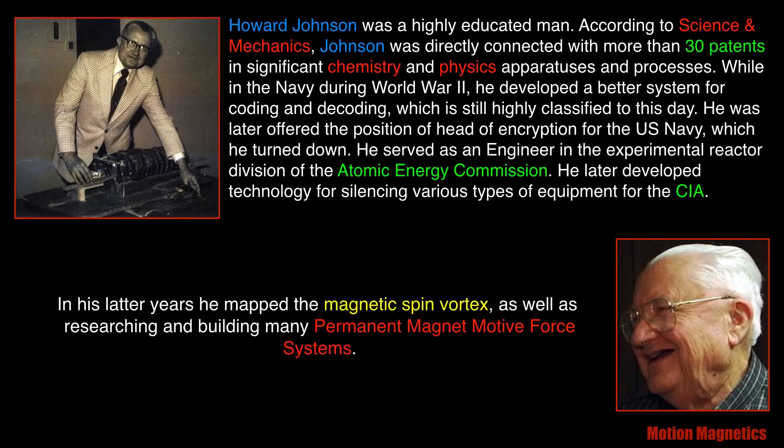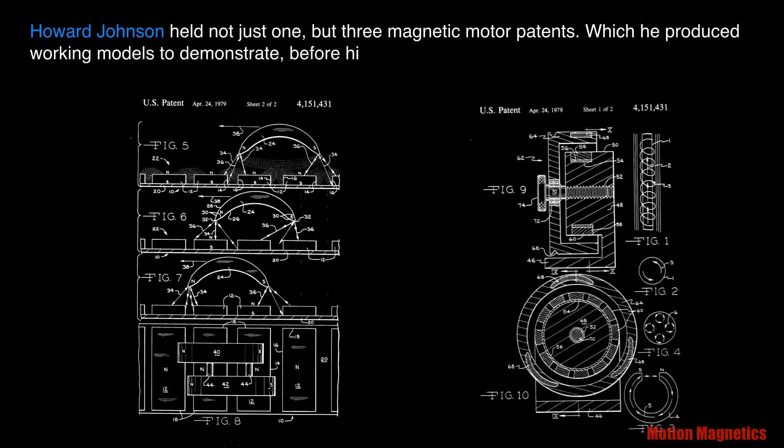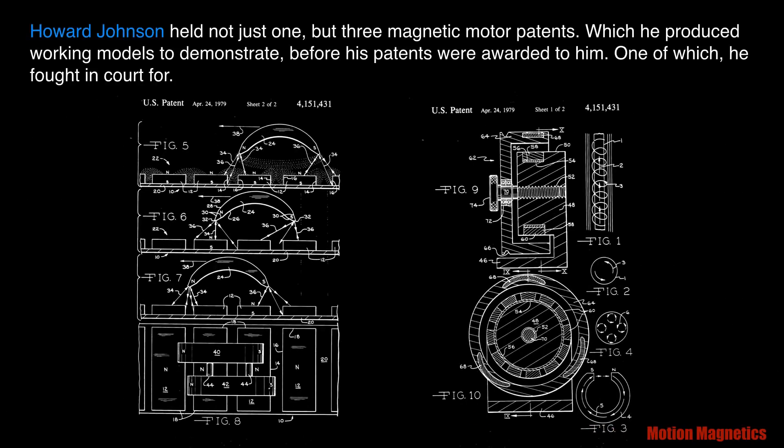What interested me the most though was what he did in his latter years, namely mapping the magnetic spin vortex and his research in permanent magnet motive force systems. Howard Johnson held not just one, but three magnetic motor patents, which he produced working models to demonstrate before his patents were awarded to him, one of which he fought for in court.